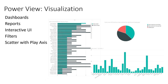Power View is the visualization element of Power BI. You can create interactive dashboards and charts with abilities to highlight and filter. It includes spatial charts like a scatter chart with a play time axis. Power View can be installed on top of Excel or built in.